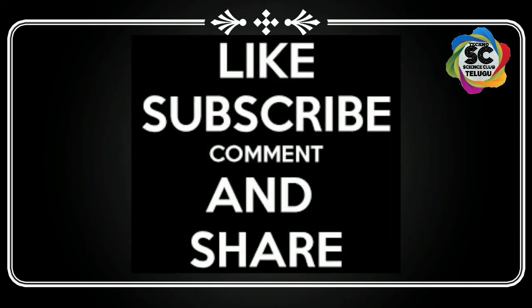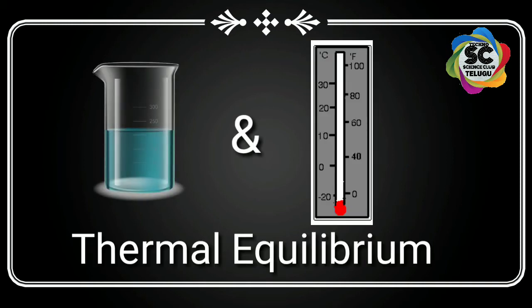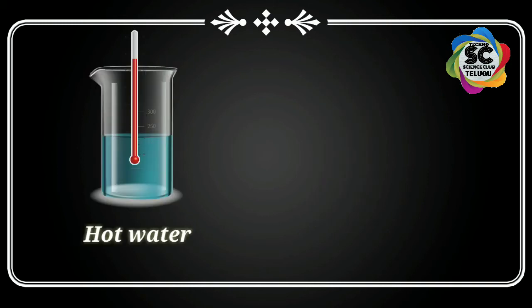The mercury gains energy and the hot water loses energy, so the mercury level increases, confirming that temperature is increasing. This continues until the water and the thermometer mercury attain the same temperature. At that position, the mercury thermometer and hot water are at thermal equilibrium — both attained the same temperature. After that, the thermometer is taken out.